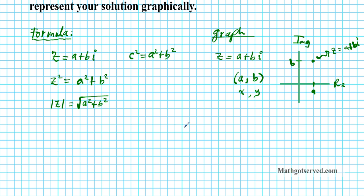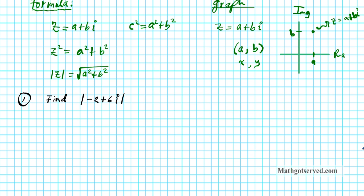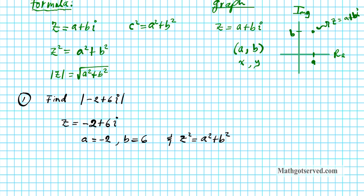Let's do the examples. Example 1: find the absolute value of negative 2 plus 6i. This is clearly a complex number because it has a real and imaginary part. We name our complex number z equals negative 2 plus 6i. From this we can see that a is negative 2 and b is 6 — remember, don't take the i. Now we'll use the formula: z squared equals a squared plus b squared.